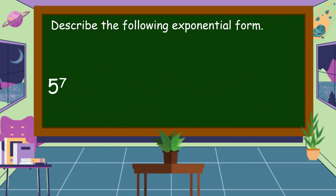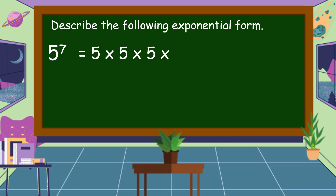Next example: what do you mean by 5 to the 7th power? This means 5 times 5 times 5 times 5 times 5 times 5 times 5. Since the power is 7, we multiply 5 seven times by itself.